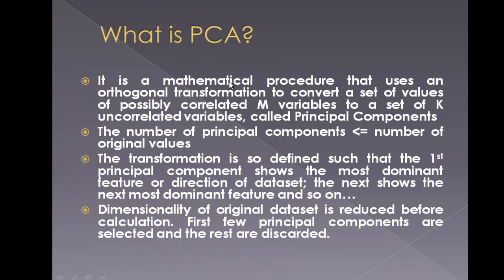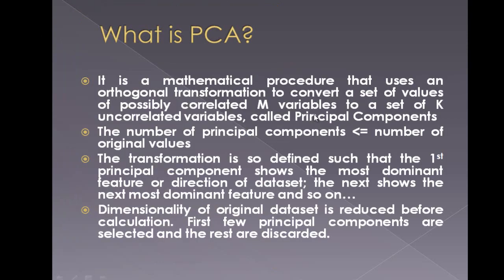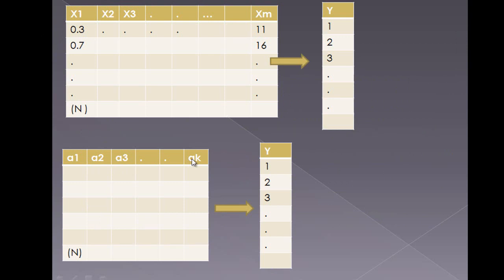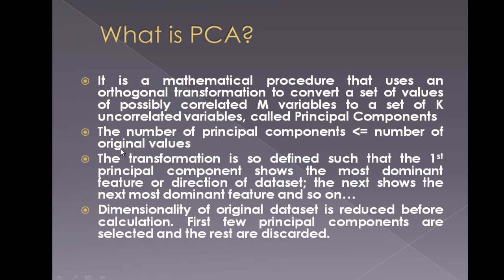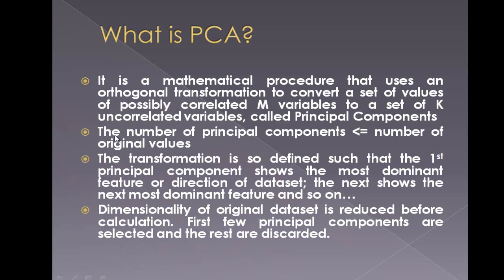PCA is a mathematical procedure that uses an orthogonal transformation to convert a set of possibly correlated m variables into a set of k uncorrelated variables called principal components. The k principal components are orthogonal to each other, so their correlation is 0. The number of principal components is less than or equal to the number of original variables — k equal to m is the worst case when vectors are already orthogonal.